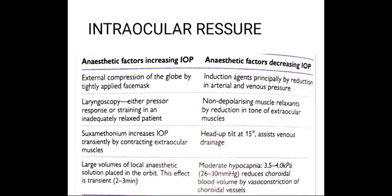The blood supply to the retina and optic nerve depends upon the intraocular perfusion pressure, defined as the difference between mean arterial pressure and intraocular pressure. High intraocular pressure impairs blood supply and leads to loss of optic nerve function. After an incision in the globe is made, factors that increase intraocular pressure can cause prolapse and loss of intraocular contents, possibly causing permanent vision loss. The globe is a relatively non-compliant compartment — the volume of internal structures is fixed except for aqueous fluid and choroidal blood volume, and the quantity of these two factors regulate intraocular pressure.